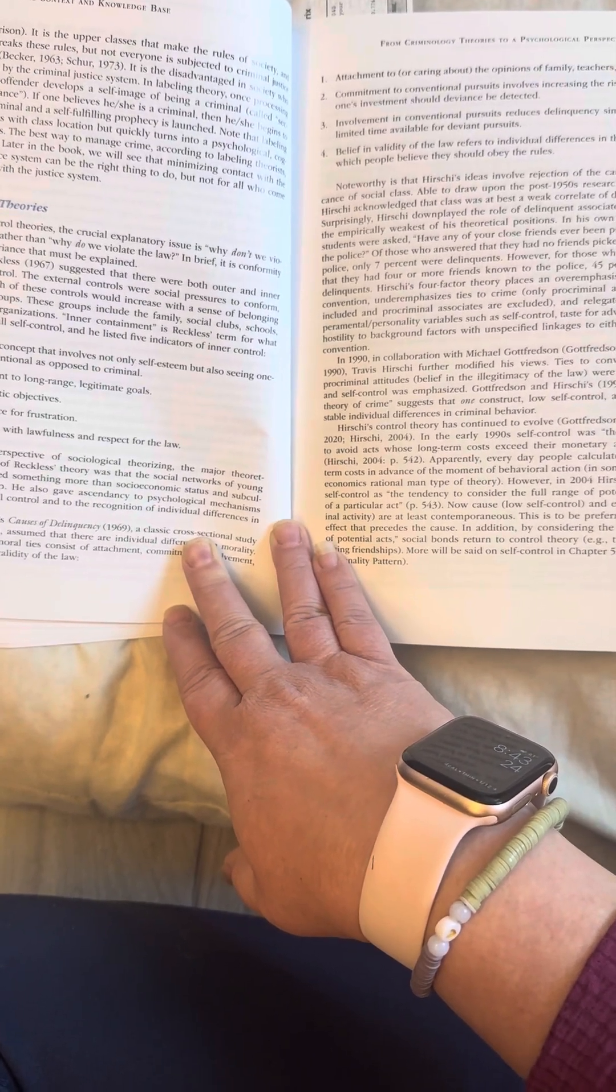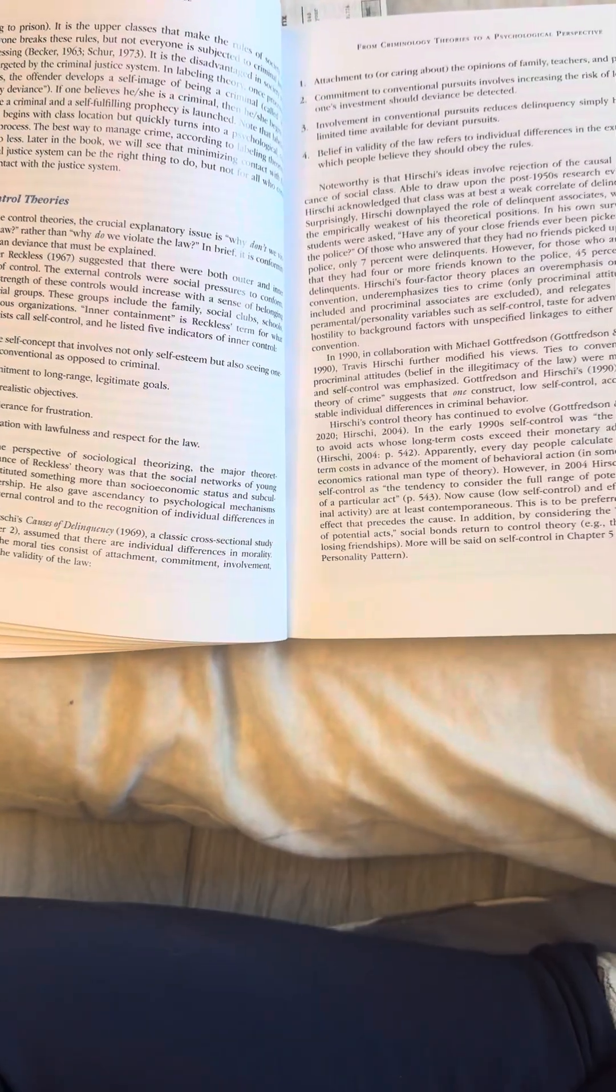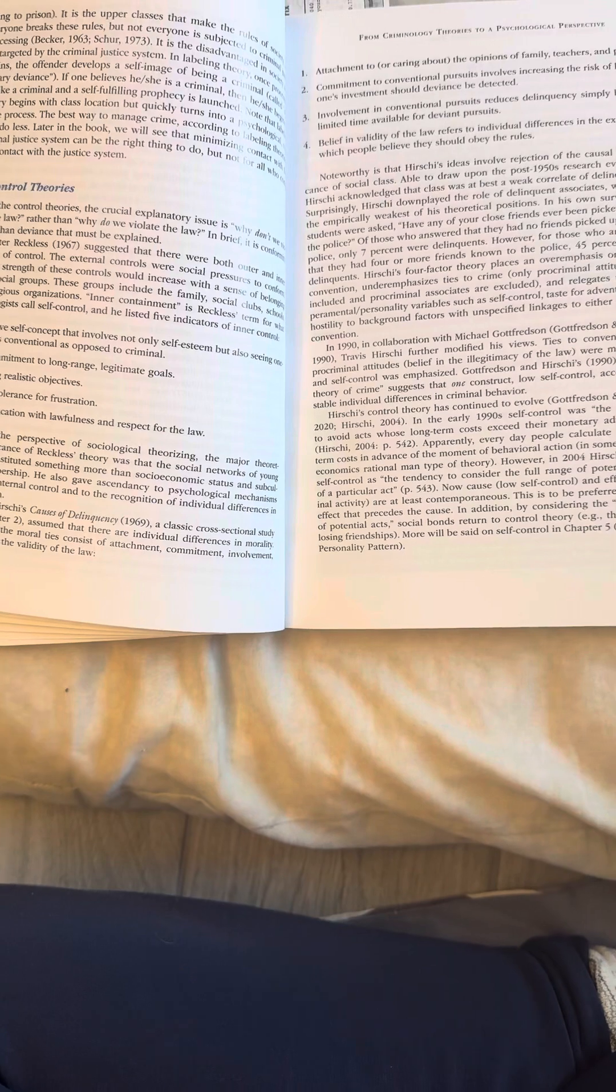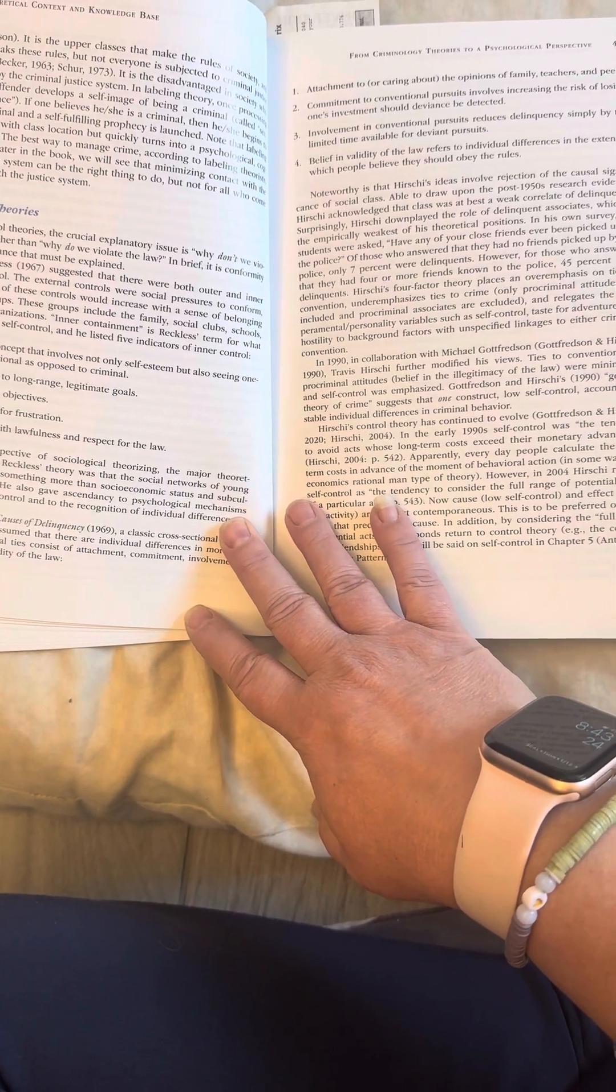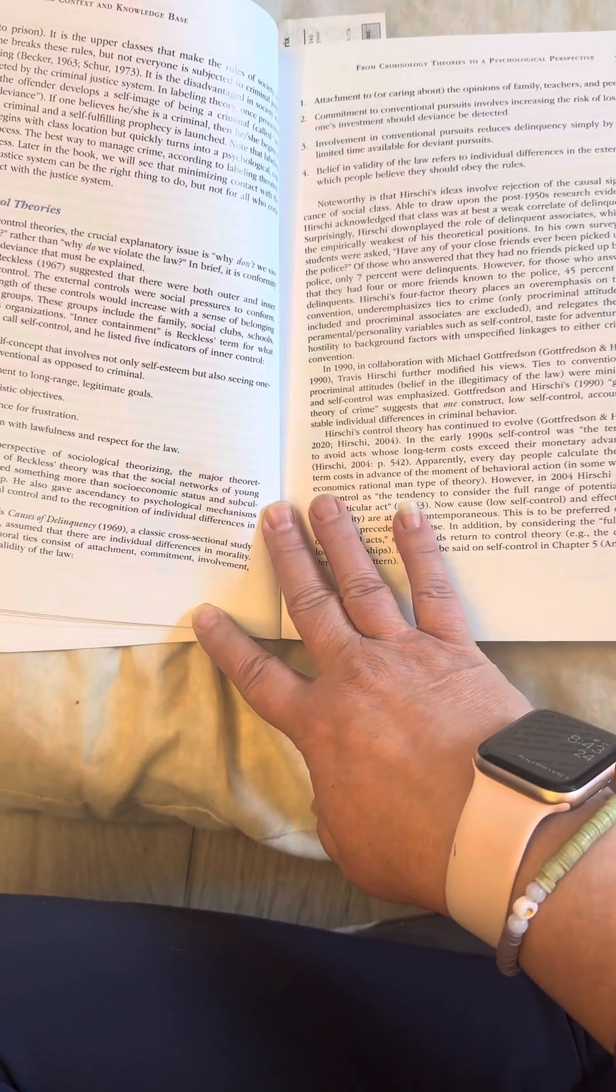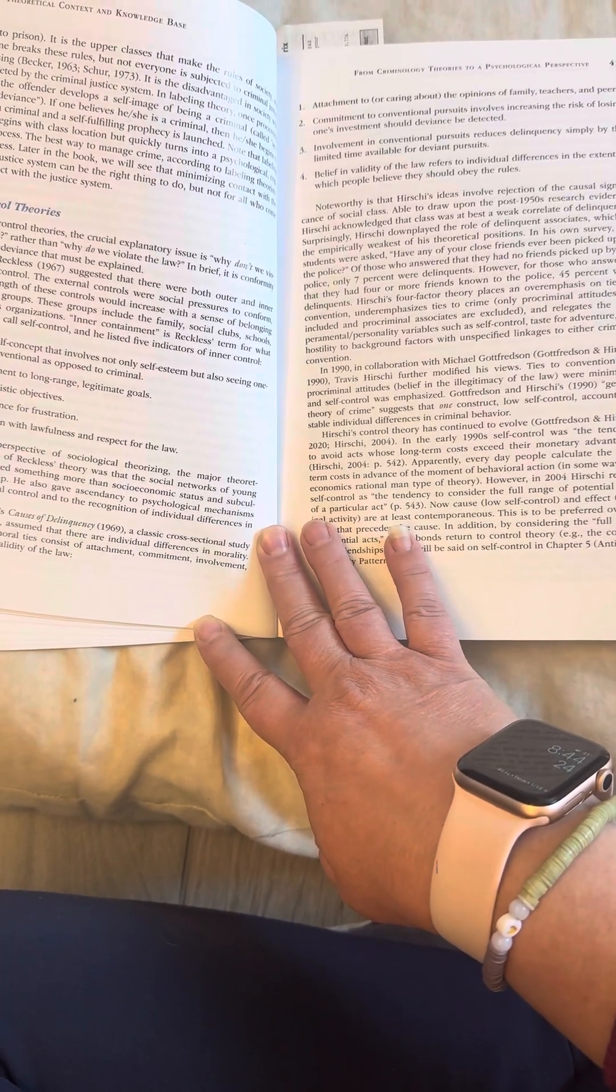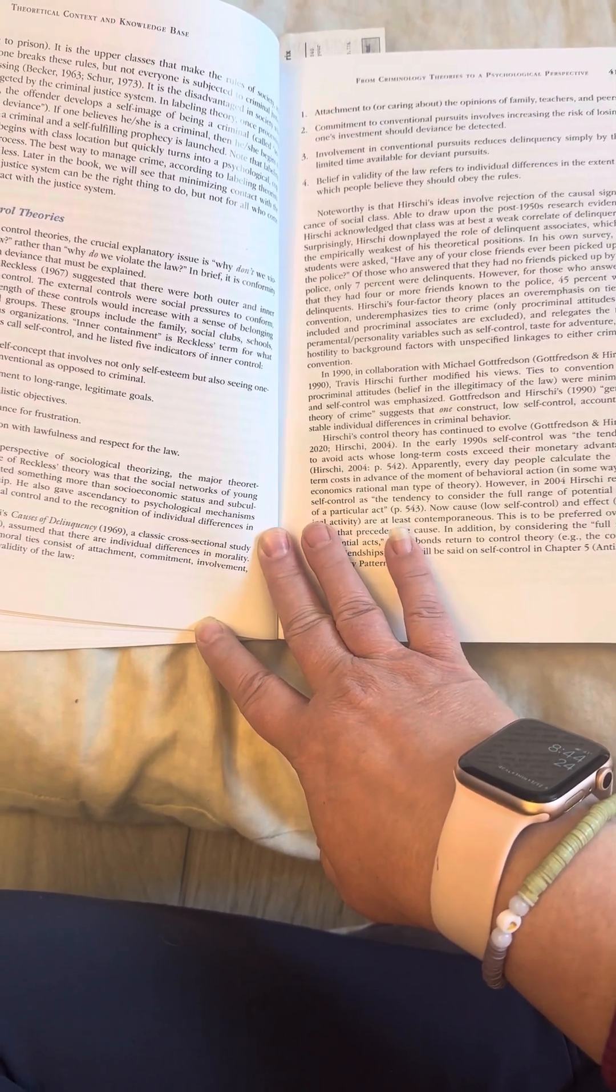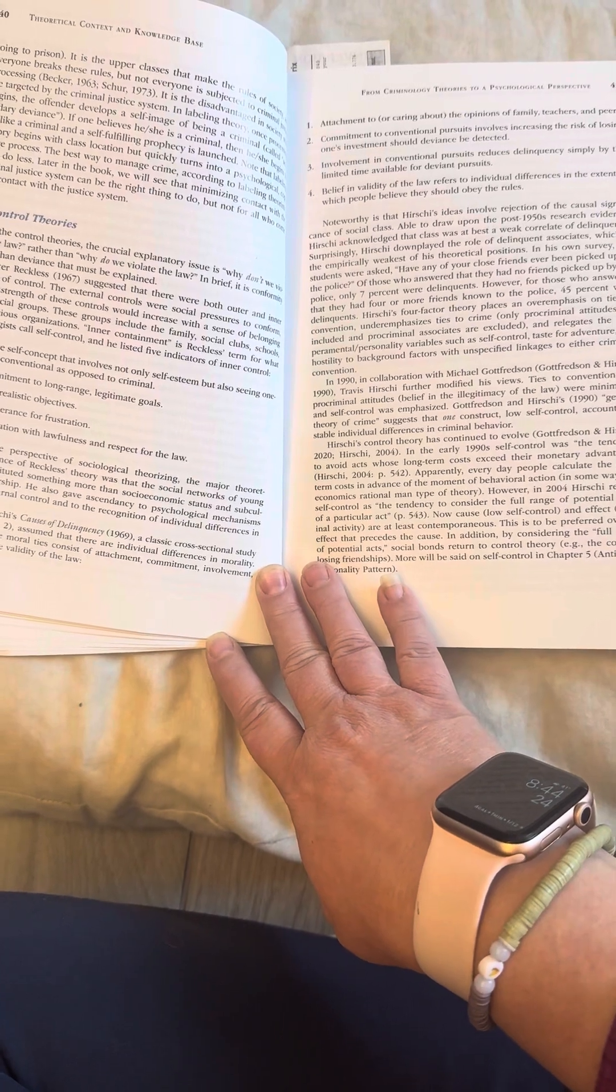One, positive self-concept that involves not only self-esteem, but also seeing oneself as conventional as opposed to criminal. Two, a commitment to long-range legitimate goals. Three, setting realistic objectives. Four, high tolerance for frustrations. Number five, identification with lawfulness and respect for the law. From the perspective of sociological theorizing, the major theoretical significance of Reckless' Theory was that the social networks of young people constituted something more than socioeconomic status and subcultural membership. He also gave ascendancy to psychological mechanisms related to internal control and to the recognition of individual differences in socialization.